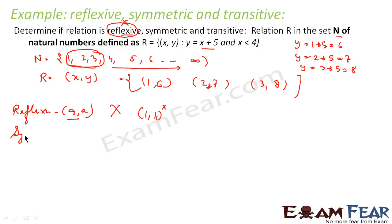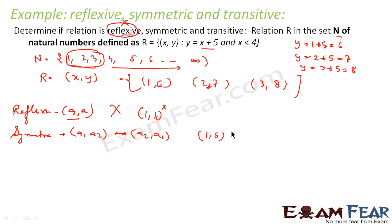For symmetric, if (a1, a2) exists, then (a2, a1) should also exist. If you see, (1,6) is there but (6,1) is not there. Since (6,1) is not there, we can say that it is not symmetric.